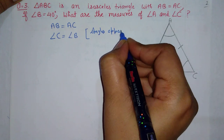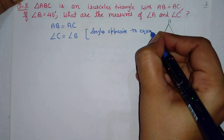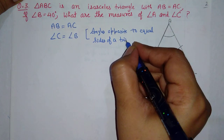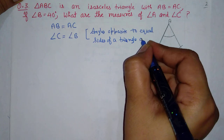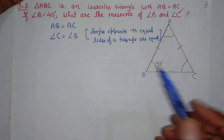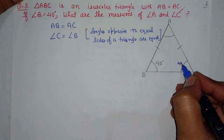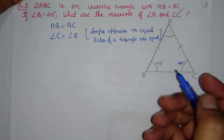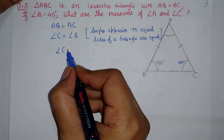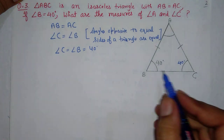The reason is: angles opposite to equal sides of a triangle are equal. So we know angle B and angle C are equal. Since B is given as 40 degrees, angle C is also 40 degrees, because both are equal. If B is 40, then C is also 40.